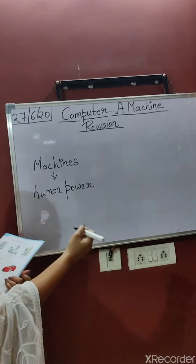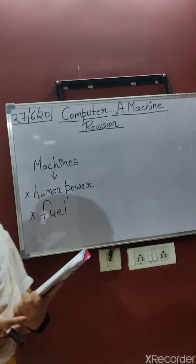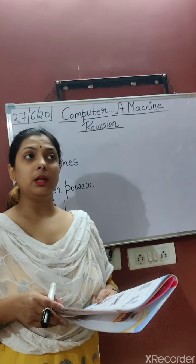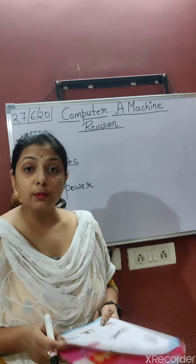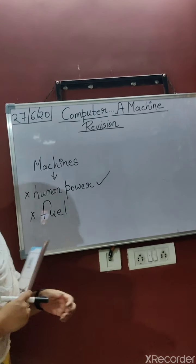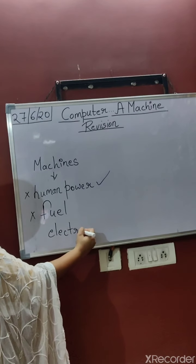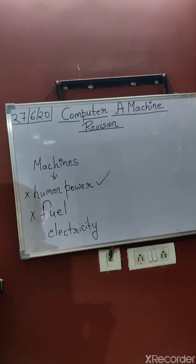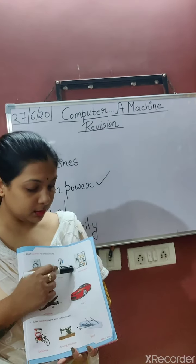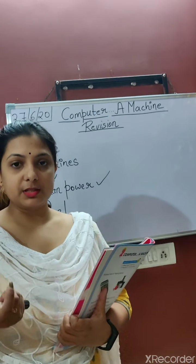The second type is machines that run on fuel — petrol, for example. An aeroplane runs on fuel, a car runs on fuel, a bike runs on fuel. But a cycle? No — a cycle comes under human power. Machines that run on electricity include the washing machine, mixer, refrigerator, AC, and fan — all run on electricity.